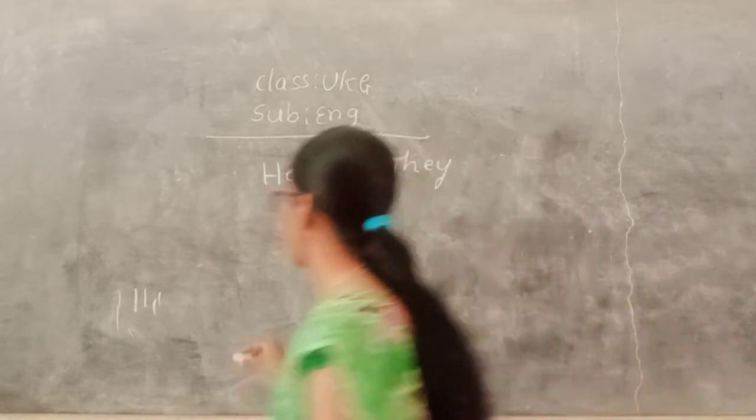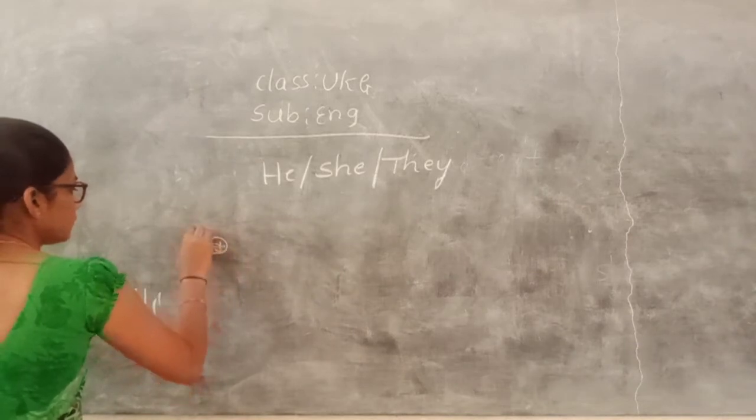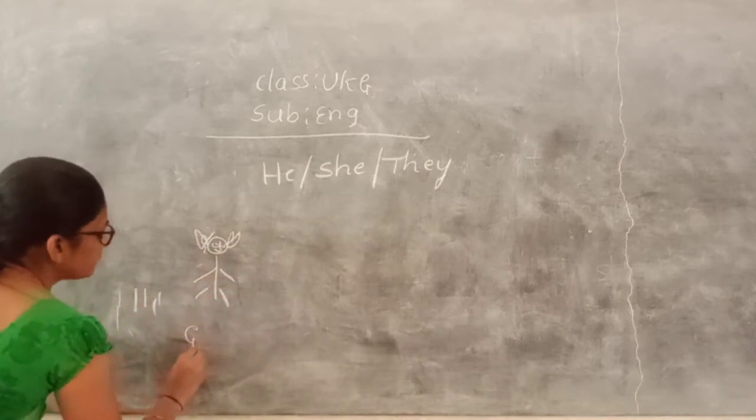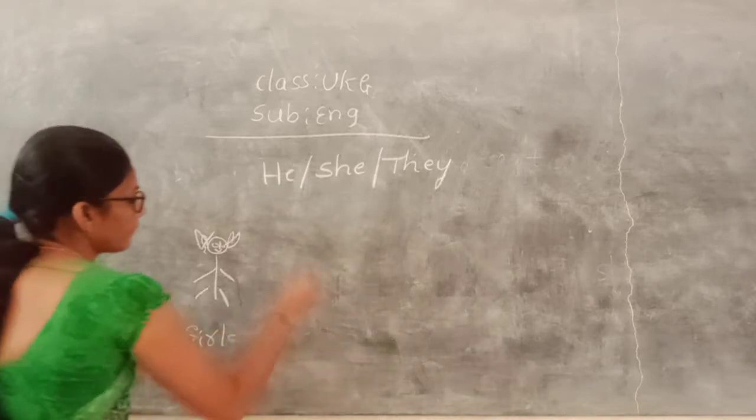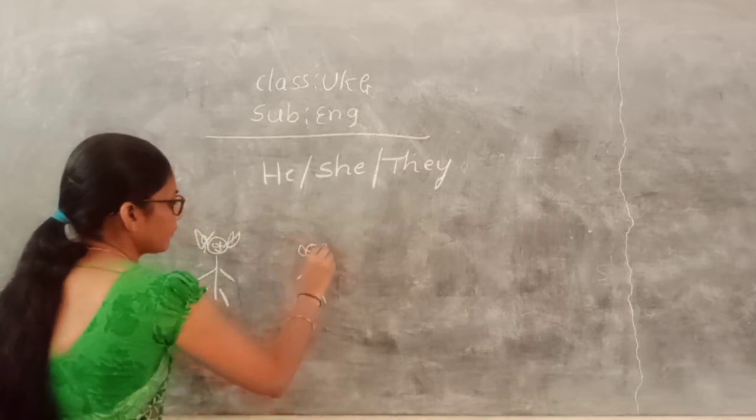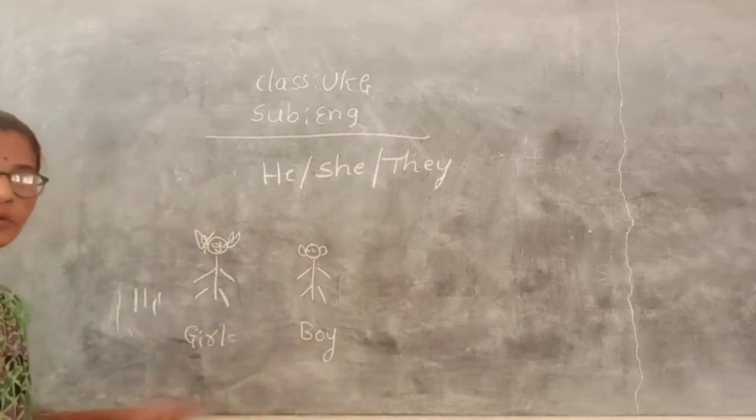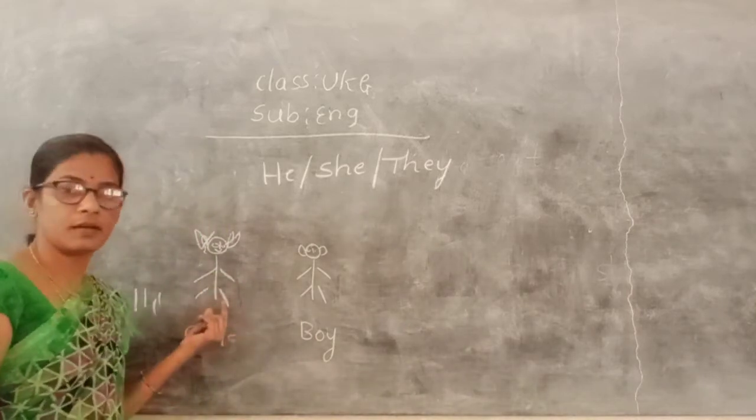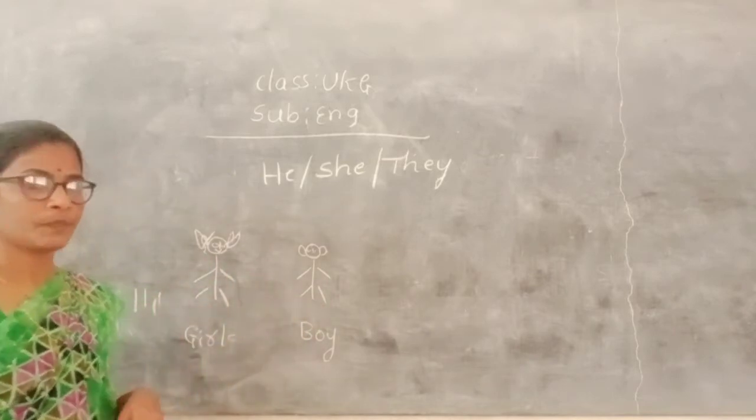Okay, I will draw here. This is girl. G-I-R-L, girl. And this one, boy. Boy. Okay. Girl. This is a girl. Boy. Next, children.